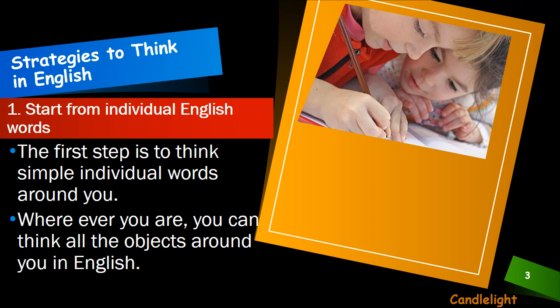There are some strategies. Number one strategy کیا ہے؟ Start from individual English words. ہم نے جو بھی ہماری language ہے — اردو، پنجابی، سرائیکی، whatever — آپ نے individual English words کو بولنا ہے۔ The first step is to think of simple individual words around you. جو کچھ بھی آپ کے around میں موجود ہے، آپ ان کو single words میں بولیں۔